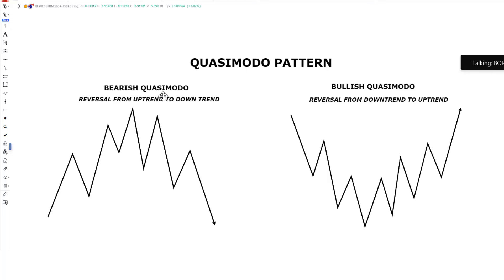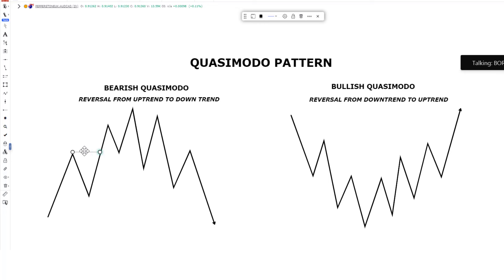The Quasimodo pattern can also be called the QML pattern. For a bearish Quasimodo pattern, what you're going to see is that price is in an uptrend. You can clearly see how price reacts to the upside forming a higher high. After price formed this higher high, we had a nice pullback. After the pullback, price reacted to the upside to break the previous structure — so this is a valid break of structure, indicating the trend is bullish. Price breaks structure and prints another higher high at this particular point.